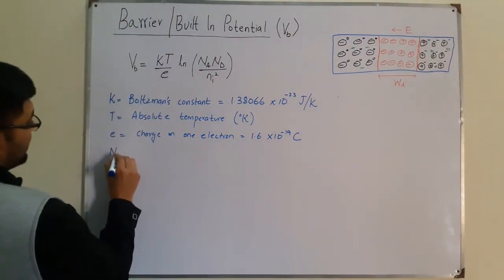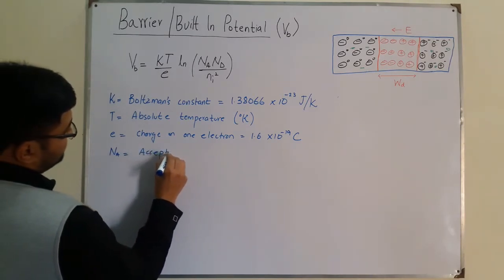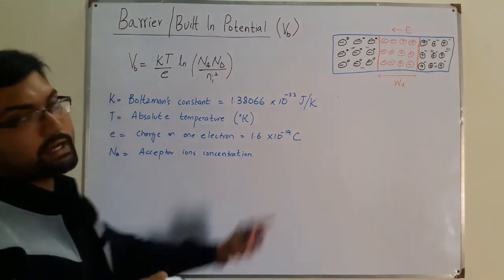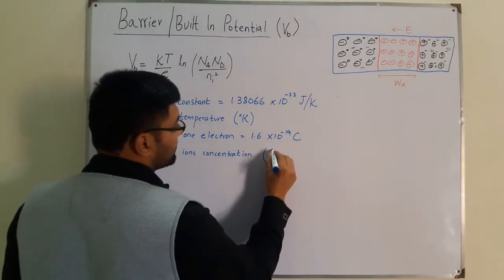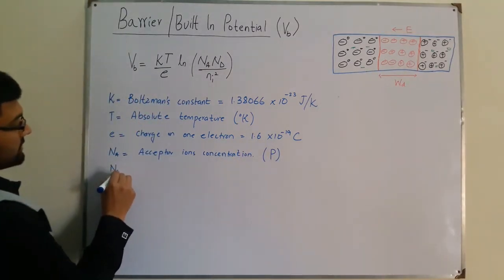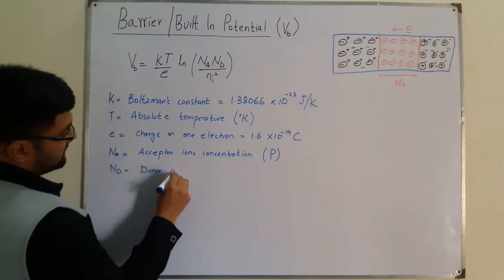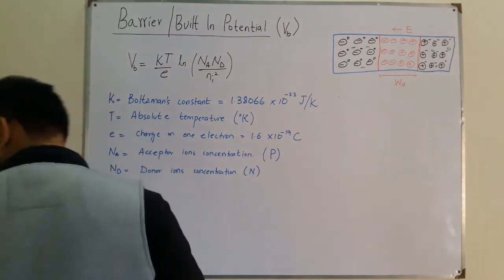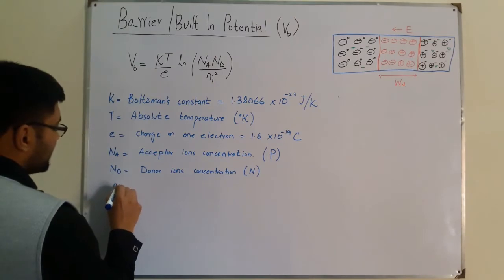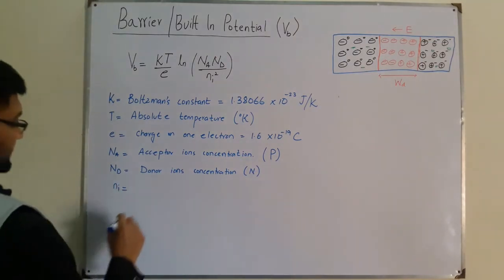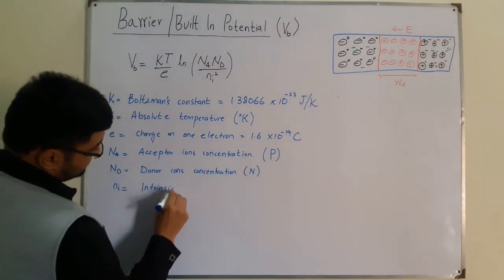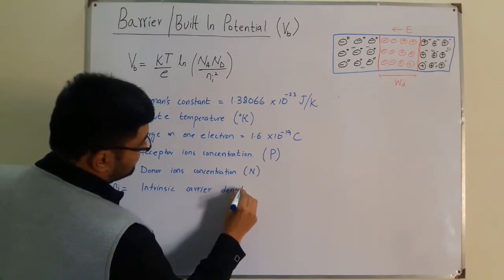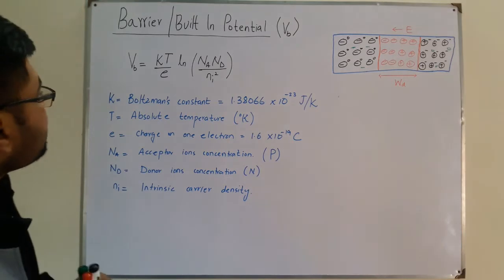NA is the acceptor ions concentration, which is on the P side. ND is the donor ions concentration, which is on the N side. NI is the intrinsic carrier density, and it represents the level of doping.